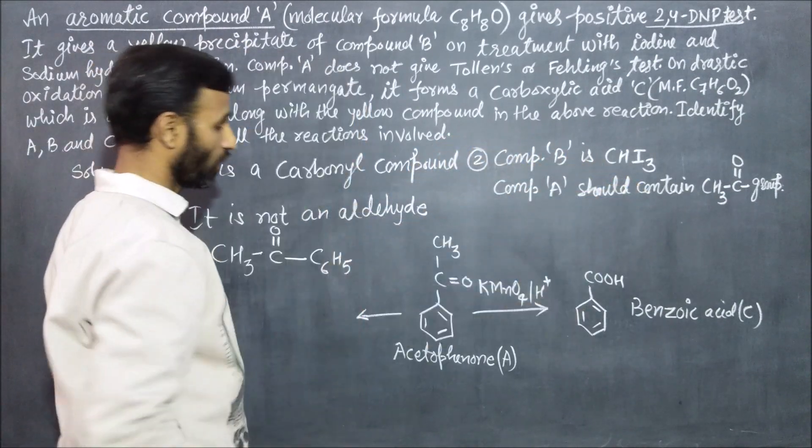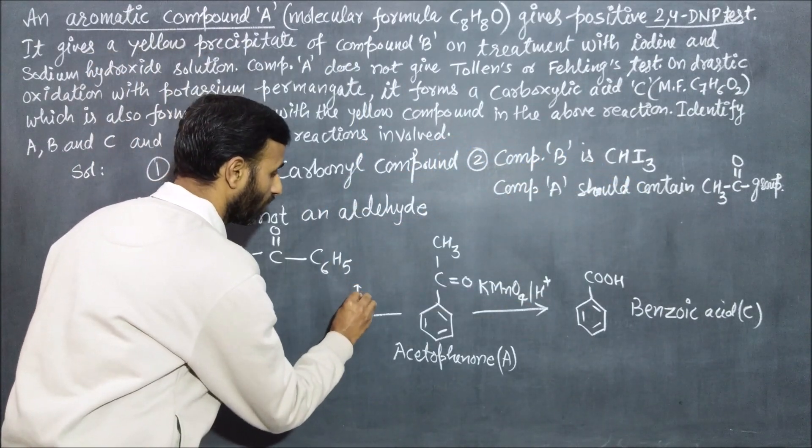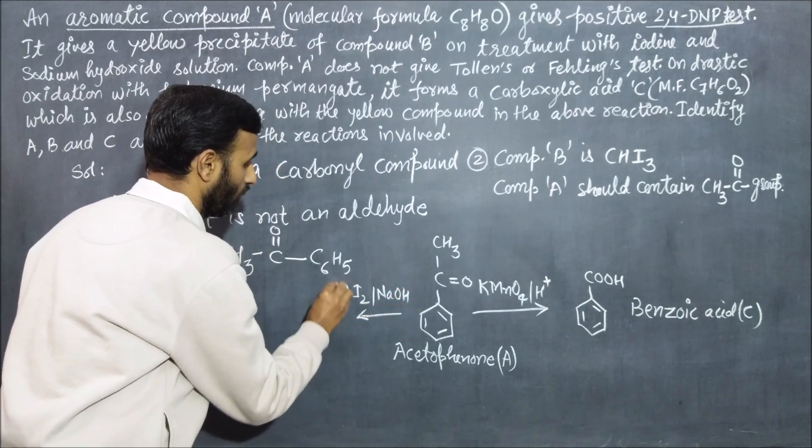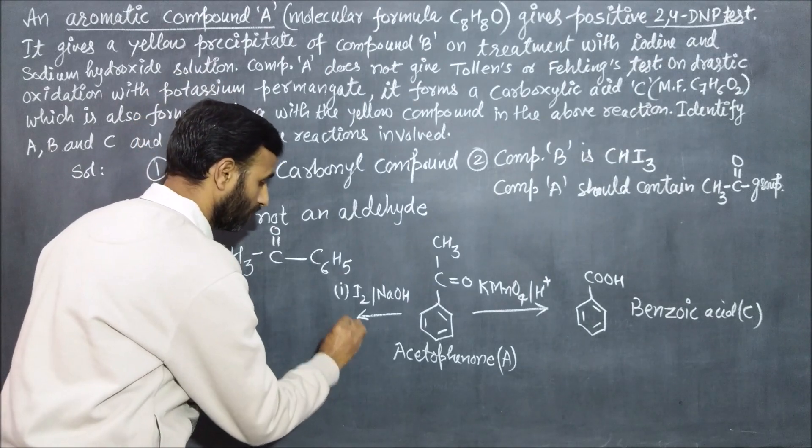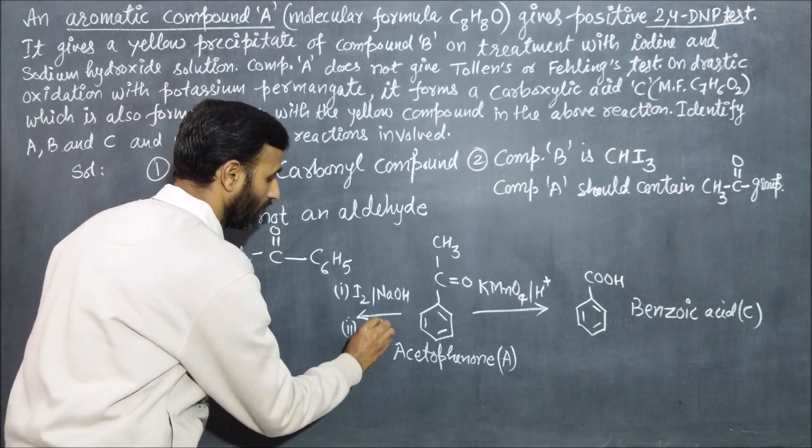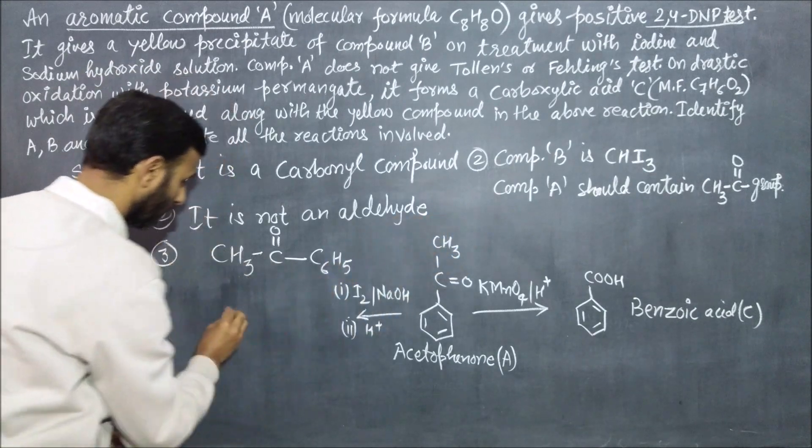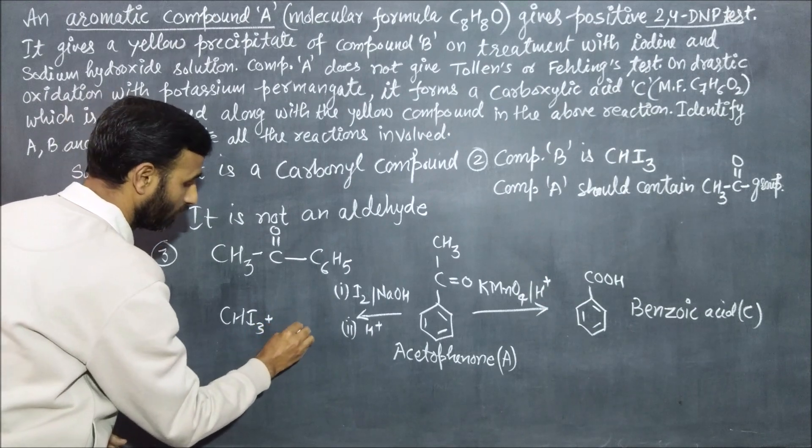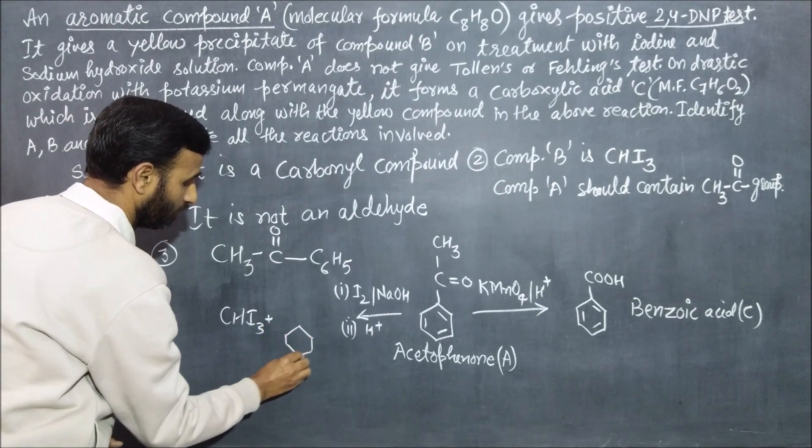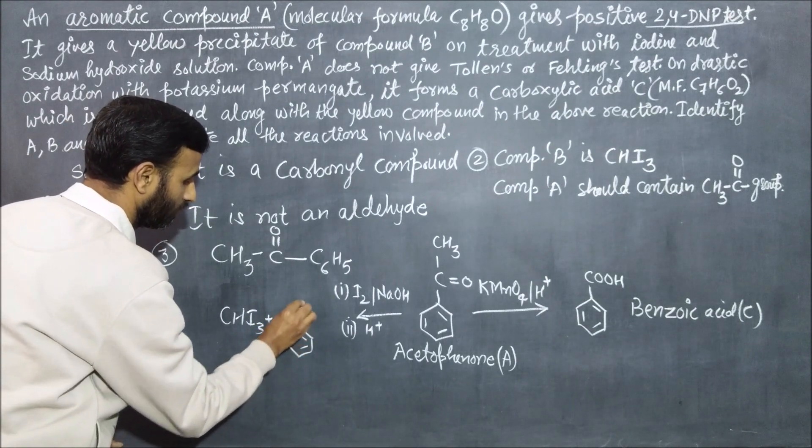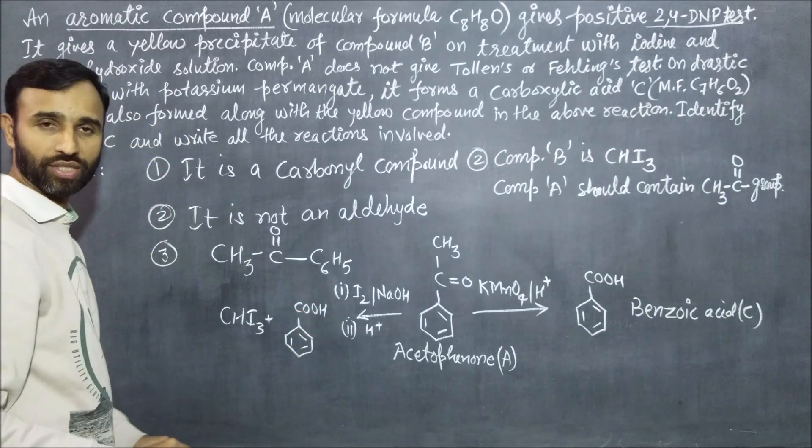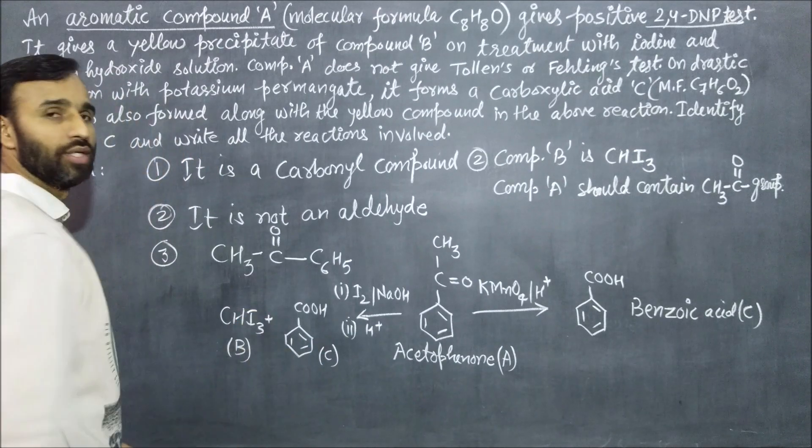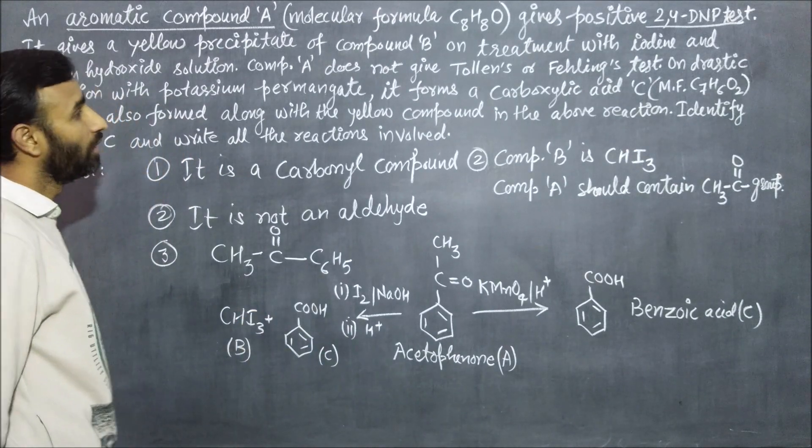Compound B we have already identified as iodoform. Iodoform test is performed with iodine in alkaline medium. It gives CH3 becoming iodoform along with benzoic acid. This is compound C and this is compound B.